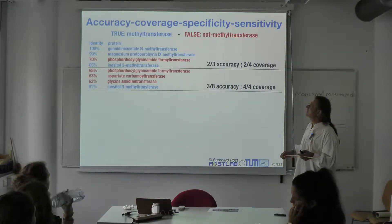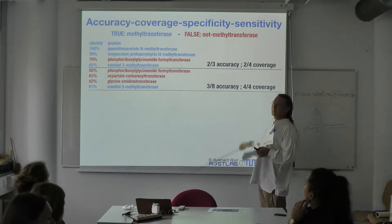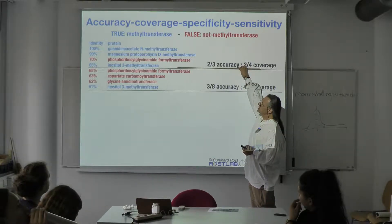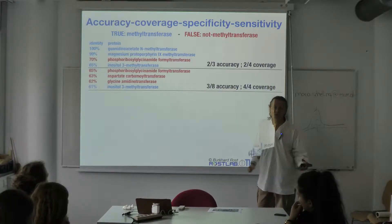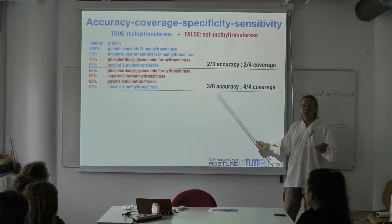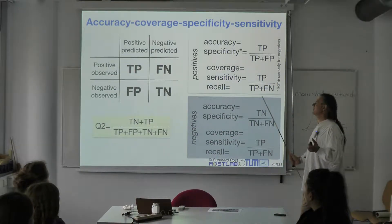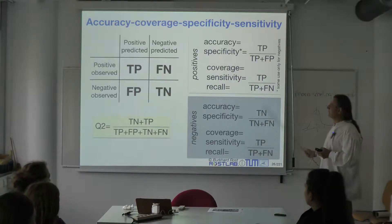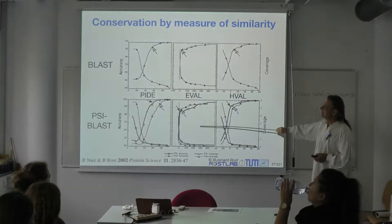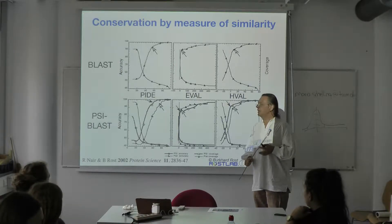To infer something like a methyl transferase, I put a threshold and say everything above is right — that is accuracy. And coverage is how many of the correct ones did I discover at that threshold. At one threshold I might have 2 in 3 right and find 2 of 4 blue ones; at a higher threshold I find all blue ones at 3 in 8 accuracy. This is the story about true positives, false negatives, false positives, and true negatives, and with these we can compile a bunch of performance scores.